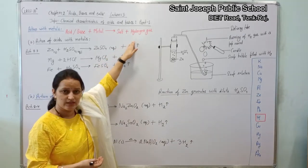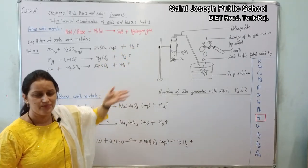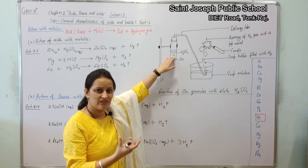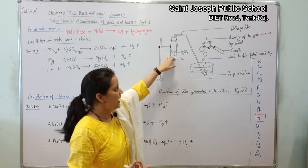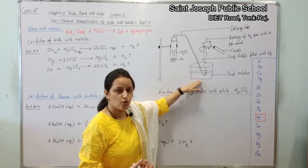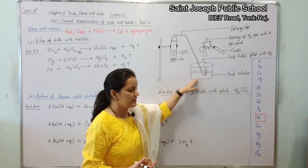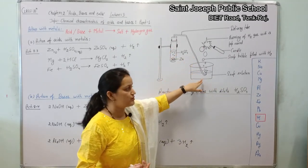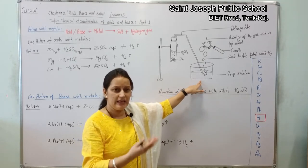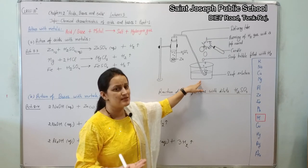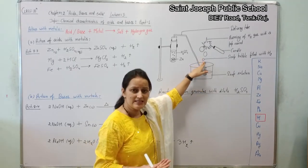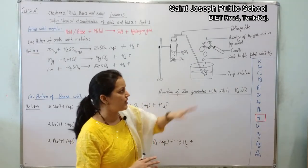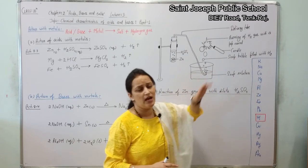Hydrogen gas is produced and its presence can be seen in the form of bubbles rising. When these bubbles pass through the delivery tube and get mixed with the soap solution in the container, soap bubbles are formed. These bubbles are not empty — they have hydrogen gas filled inside them, and we label them as soap bubbles filled with hydrogen gas.